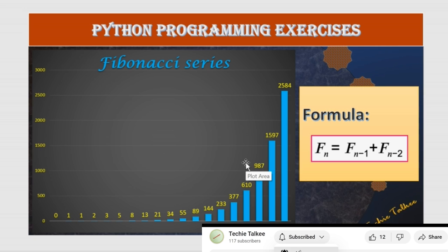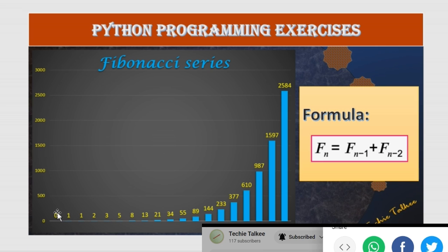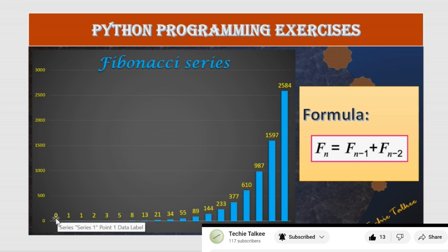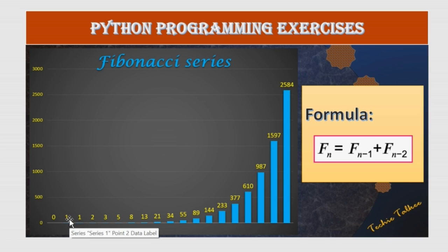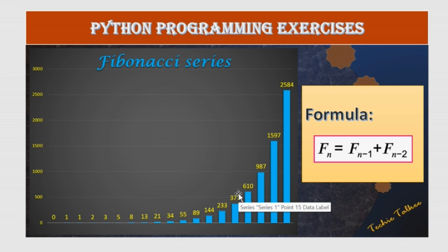It is a series of numbers where a number would be generated by adding two preceding numbers. This Fibonacci series starts with 0, the next number is 1. To generate the third number, we will have to add the first two numbers. So 0 plus 1 is 1. And to generate the next number, we will have to add the previous two numbers. 1 plus 1 is 2. The next number will be 1 plus 2 which will be 3, and it keeps going on.